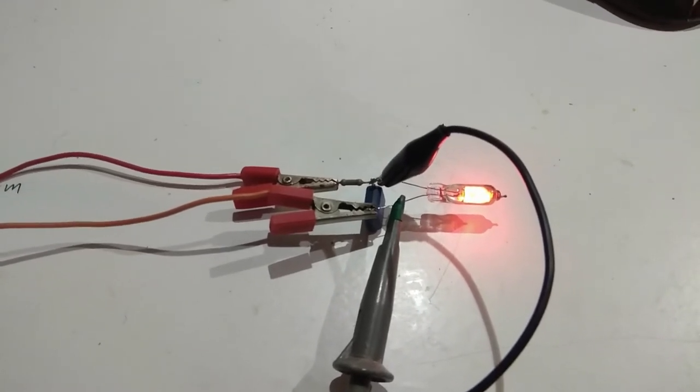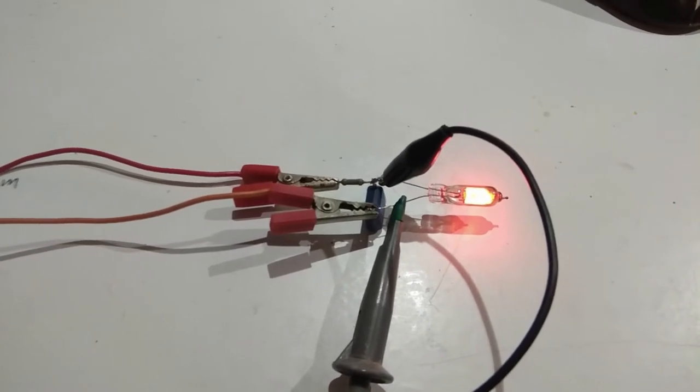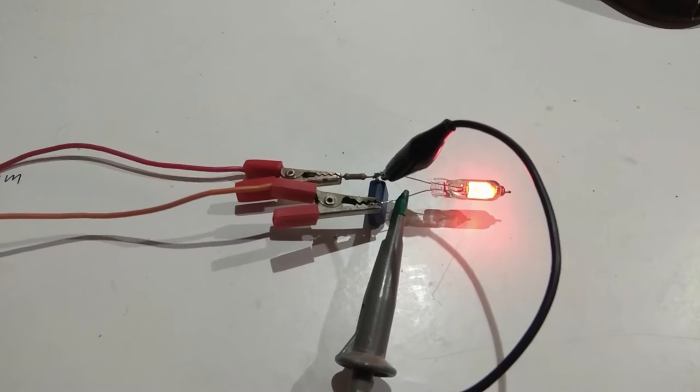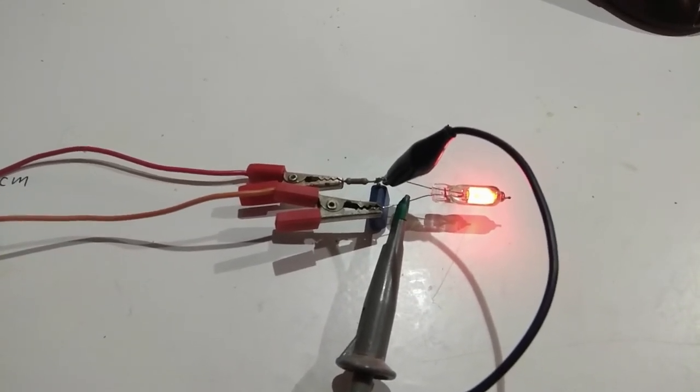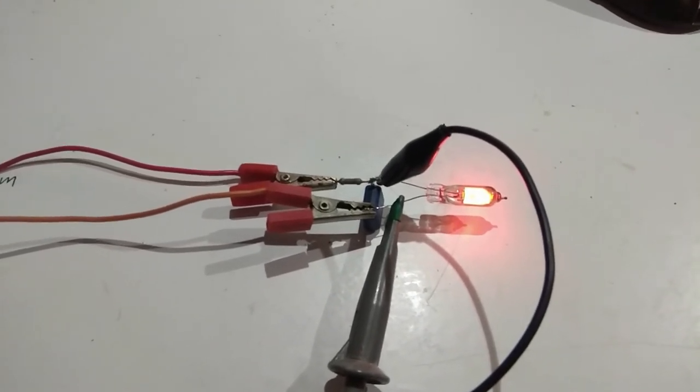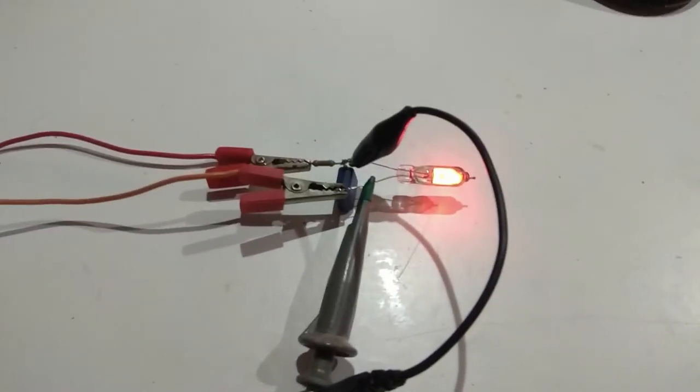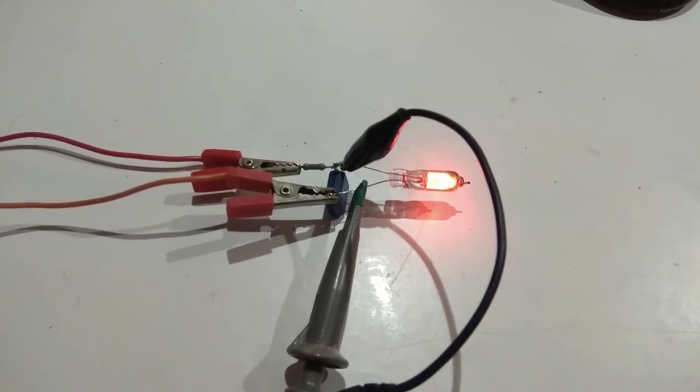You can see it's a sawtooth oscillator and it will create a triangular sawtooth-shaped waveform. This circuit consists of only three circuit elements. One is a resistor here on the left.